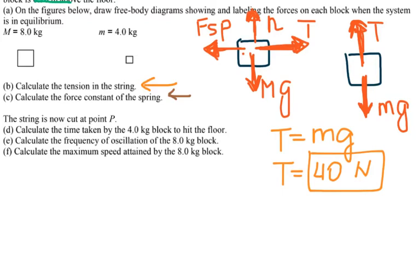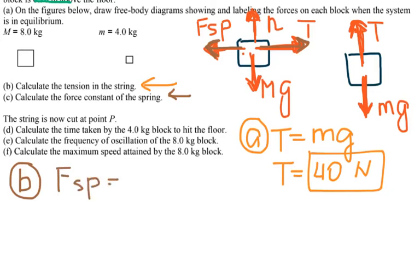For part B, calculate the force constant of the spring. The spring force equals the tension force and follows the formula F = kx. The negative sign in Hooke's law just indicates the spring force opposes the displacement, so you don't need to plug in the negative every time you calculate.